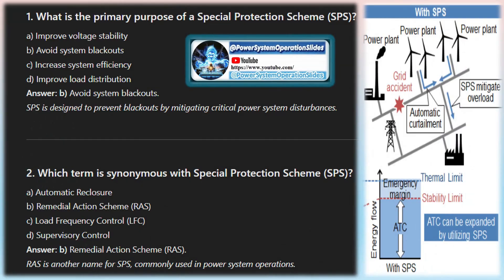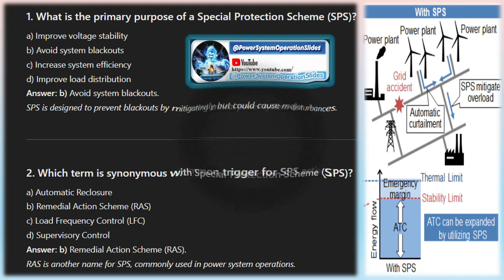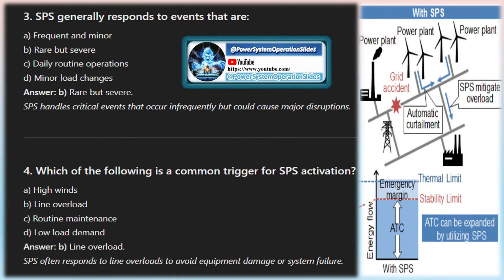Special protection schemes are mainly applied in weak and/or highly loaded systems where the N-1 rule is not fully met and where normal or exceptional contingencies exceed the robustness of the system, bringing the system directly from the normal state to the emergency state or even to the blackout state. Possible applications include: improving power system operation, coping with operational difficulties imposed by particular power system characteristics, operating the power system closer to its limits while maintaining sufficient transmission capacity during planned outages, and containing normal or exceptional contingencies in case of insufficient safety margins due to limited redundancy.